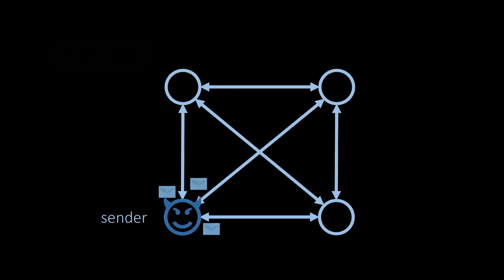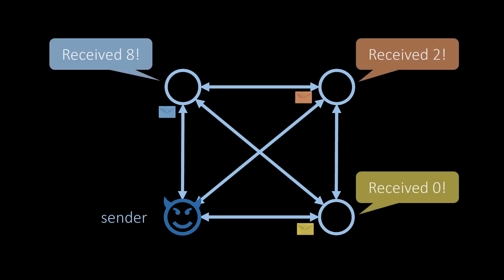If we consider worst case failures, which includes malicious behavior, the situation is even worse. In this case, if the sender is faulty, it may, accidentally or on purpose, send different messages to the other nodes. In this case, the recipients do not even know if the value they received is consistent with values that others may have received.